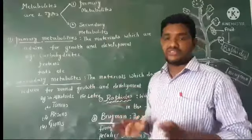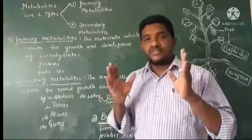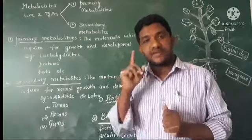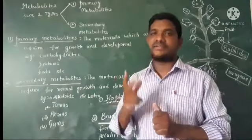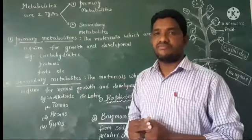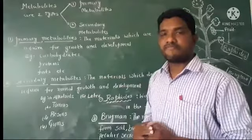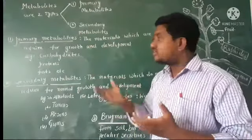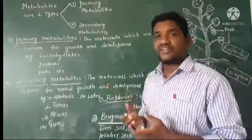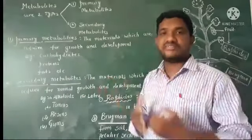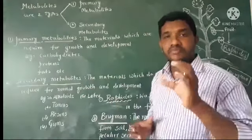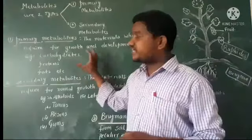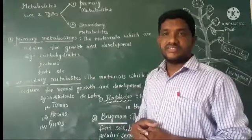These two types are very important. There are two kinds of biochemical substances: primary metabolites and secondary metabolites. Primary metabolites are carbohydrates, proteins, and fats — the substances required for growth and development.